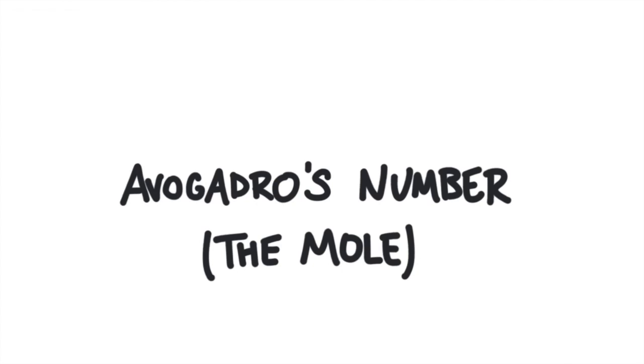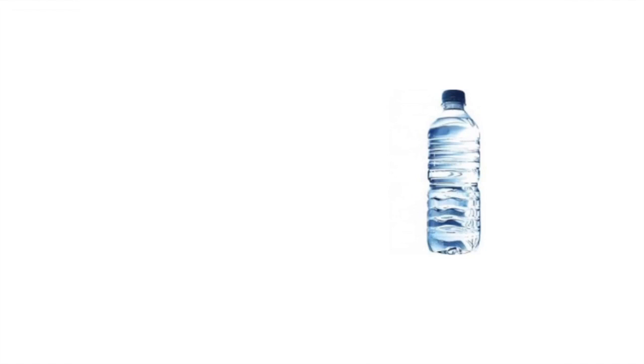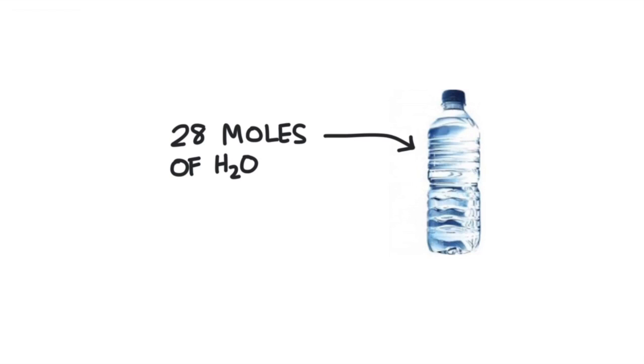One mole is equal to 6.02 times 10 to the 23. That's six, zero, two, and then a whole bunch of zeros after it. It's a massive number. Yet atoms and molecules are so incredibly small that a small bottle of water contains about 28 moles of water molecules.